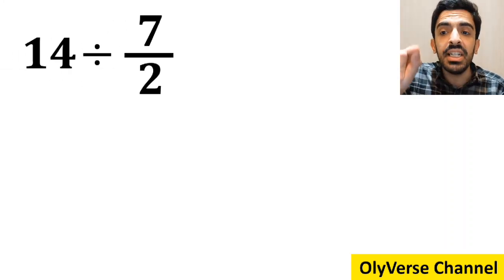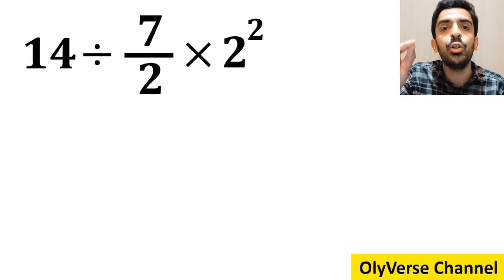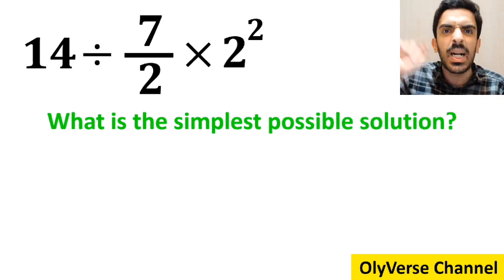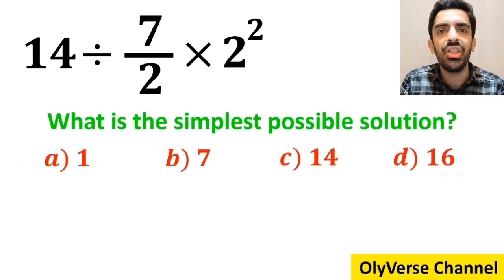If we have the expression 14 divided by 7 over 2 times 2 to the power of 2, then what is the simplest possible solution for this expression? Which option do you think is the correct answer to this question?